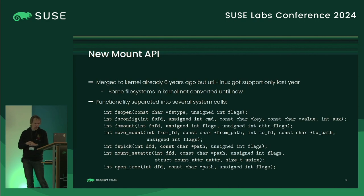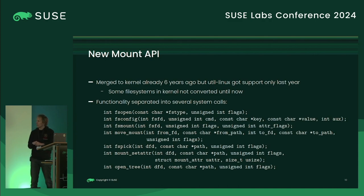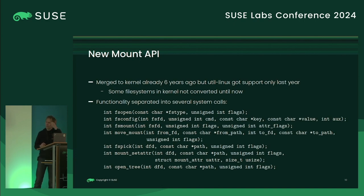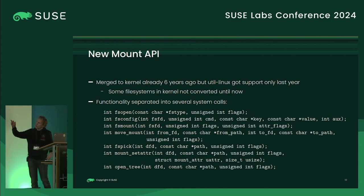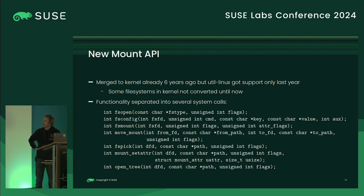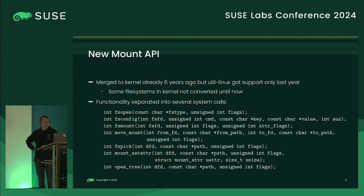The new mount API was merged into the kernel six years ago, but after the patches were merged the developer moved on, so user space support in util-linux arrived only last year. Each file system also needs its own conversion to support the new API's features — ext4 and XFS are already converted, but btrfs is still work in progress.